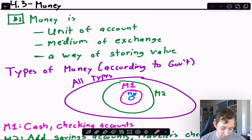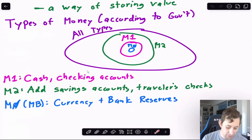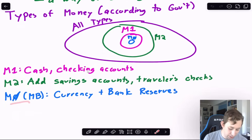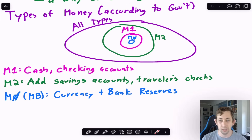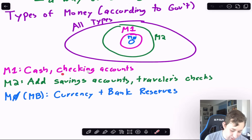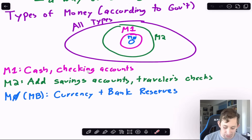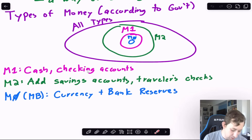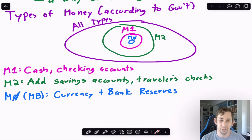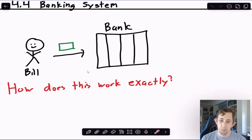There are different classifications of money based on how the U.S. government categorizes assets. For AP Macro, you need to know M0 — the monetary base, which is the number of dollar bills in circulation plus bank reserves. Adding checking accounts gives us M1. Adding savings accounts and travelers' checks gives us M2. Those are the three classifications you need to know for the AP Macro exam.